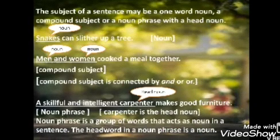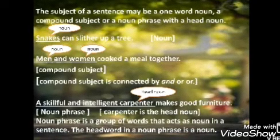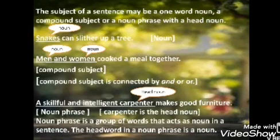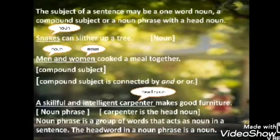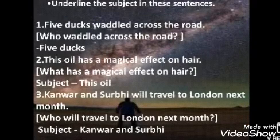Third example: 'A skillful and intelligent carpenter makes good furniture.' Who makes good furniture? A skillful and intelligent carpenter. Here it is not a single word, nor two separate nouns — it is a group of words, a noun phrase. In this noun phrase, the head noun is 'carpenter.' 'A skillful and intelligent' qualifies the head noun 'carpenter.' So the subject is a noun phrase, and a noun phrase is a group of words that acts as a noun in a sentence.